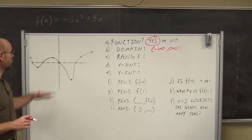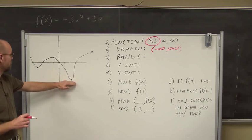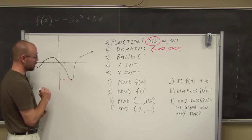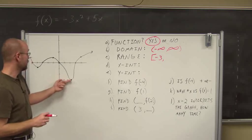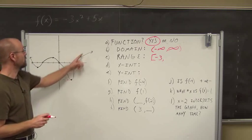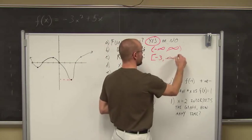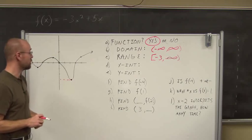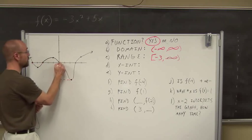For the range, the graph isn't going down to negative infinity. There is a lowest point here, which appears to be at negative 3. So my range starts at negative 3 — included because the point is on the graph — and goes upward to positive infinity on both sides. For x-intercepts, remember that is where y equals 0. I can see there's an x-intercept here, here, here, and here — four x-intercepts for this particular graph.